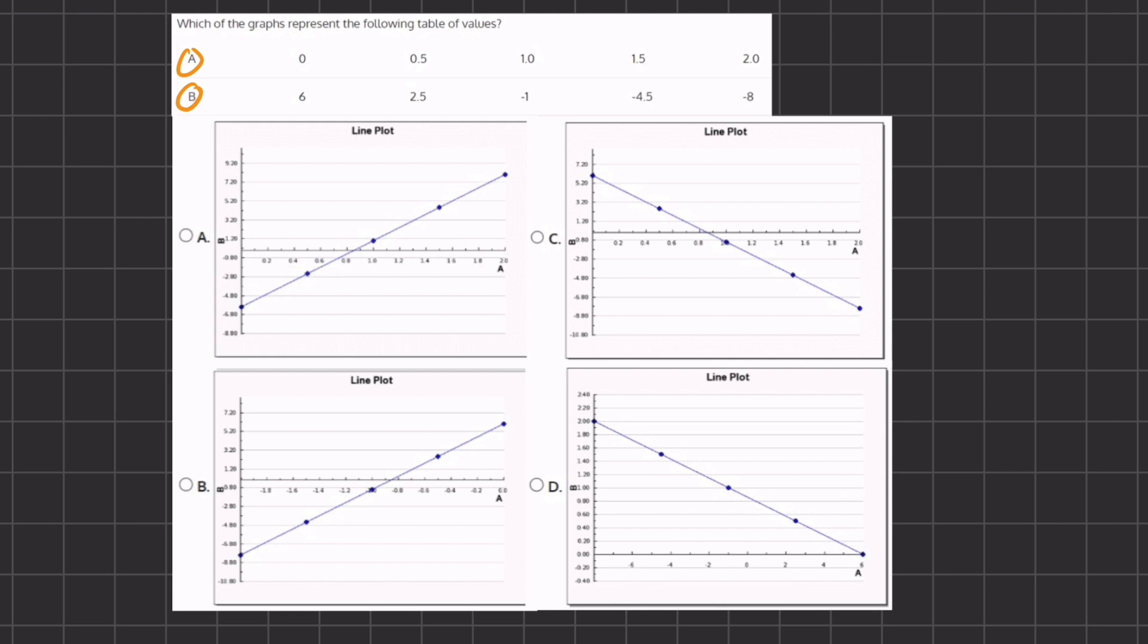All right, so our first point is 0 up 6. If we take a look at graph A and we go to 0, we want to find a point up here at 6. It is not plotted, and therefore A does not represent our table of values.